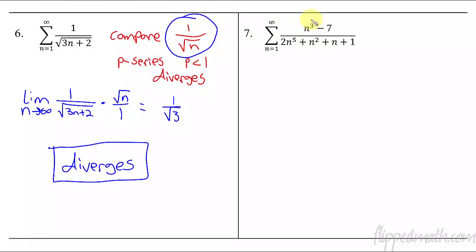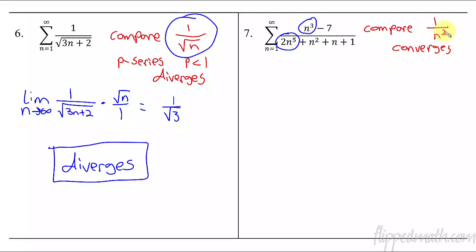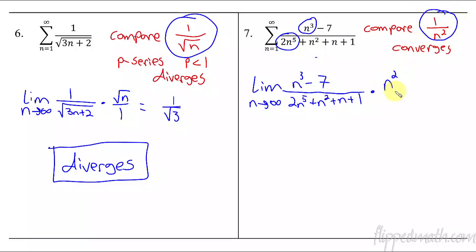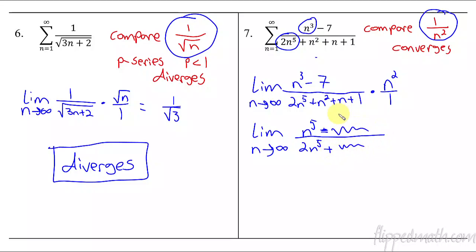This one — let's compare. We have these leading terms. If we reduce those, we compare it to 1 over n², which is a p-series that converges because p is greater than 1. So let's check with the limit. We take the limit as n approaches infinity of this whole thing, multiplied by the reciprocal — n² over 1. This simplifies down to n⁵ over 2n⁵ as you go to infinity, and that equals 1/2. Since 1/2 is positive and finite, they both do the same thing — converges. I like the limit comparison test because you don't have to figure out which one's larger.